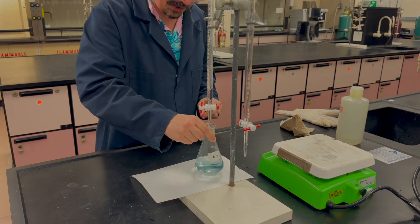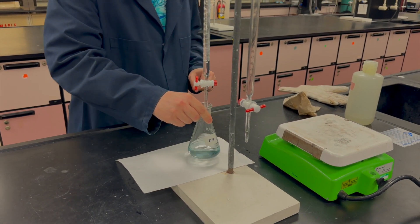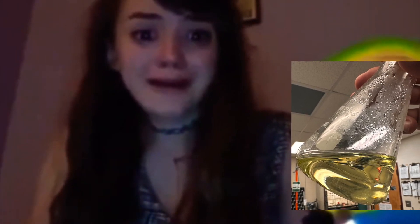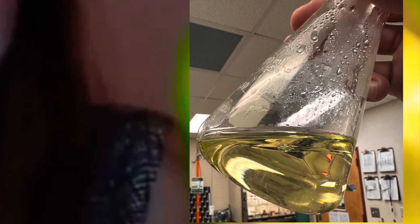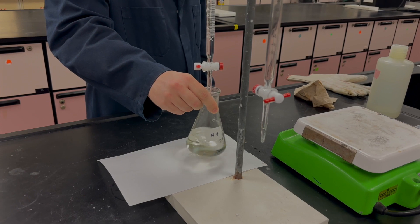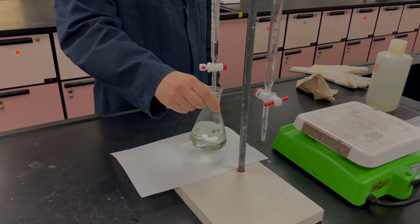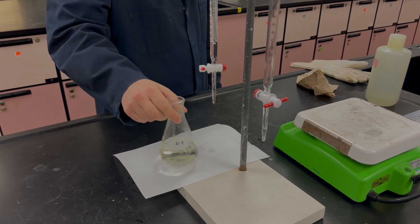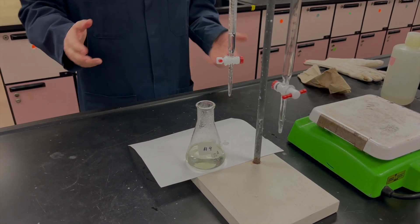We're going to resume that titration, and more than likely we're going to see that yellow color come pretty rapidly. Even though you may be using 10 or 20 milliliters to get to the point right before this, it's probably only going to be four or five drops to get that final yellow color that you're looking for.